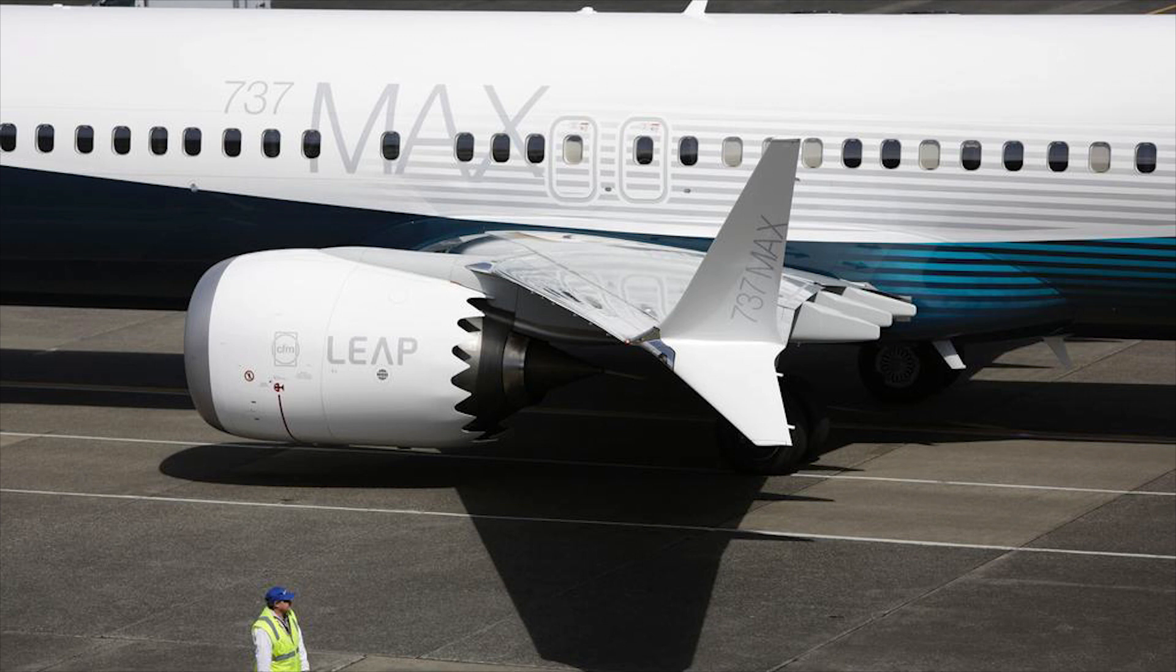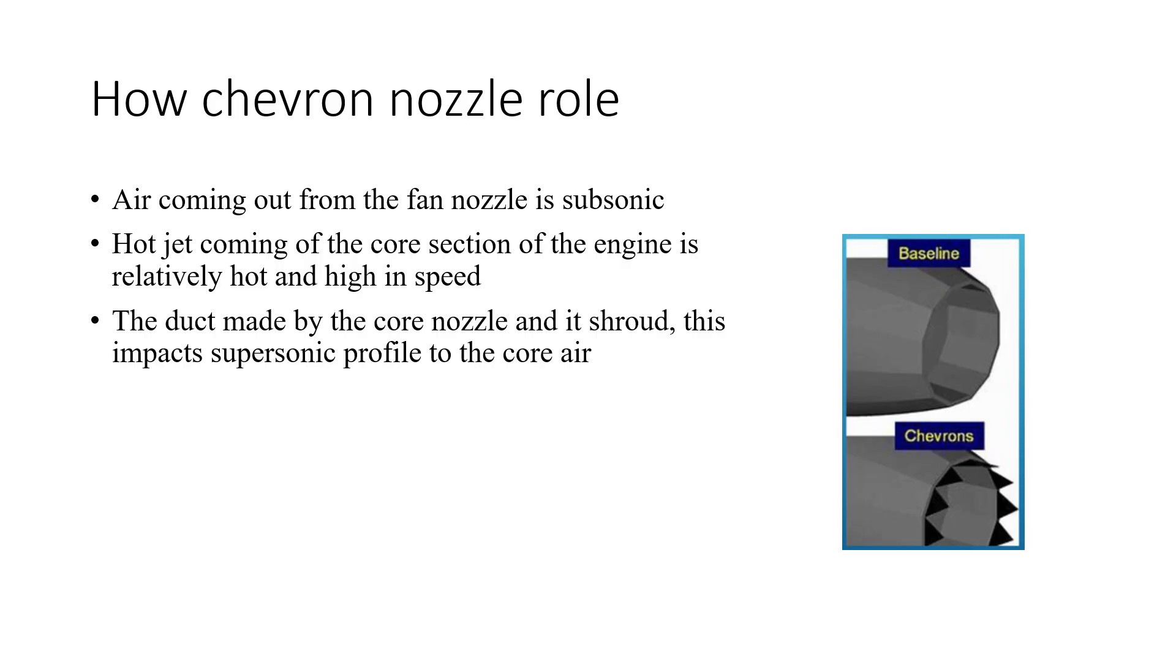The chevron nozzle is a new concept, however it is currently being implemented by Boeing in the Boeing 737 engines. It cuts the rear circumferential and trailing edge of the engine in a repeated saw tooth pattern, as you can see.